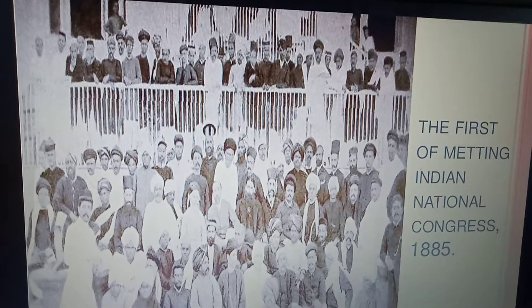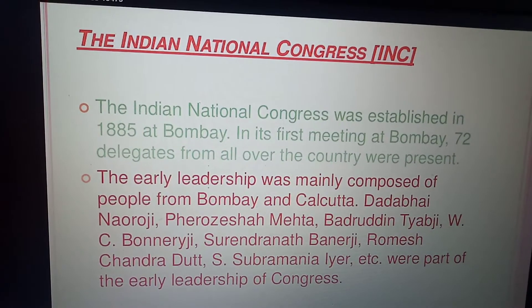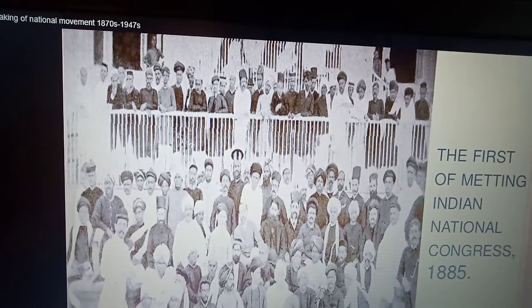It was decided that the annual session of the Congress would be held every year at a different place to review progress. The second session was held at Calcutta and was presided over by Dadabhai Naoroji. The first meeting was at Bombay presided by W.C. Banerjee, and the second at Calcutta presided by Dadabhai Naoroji.